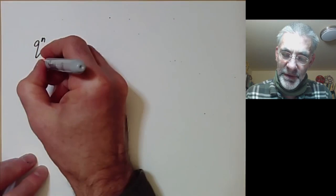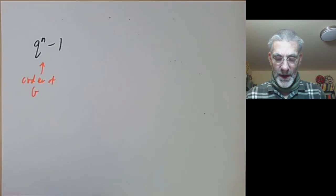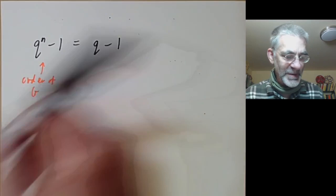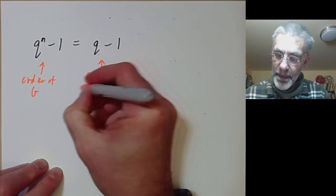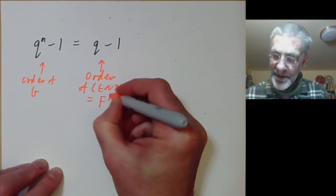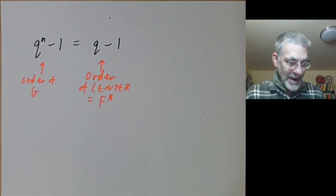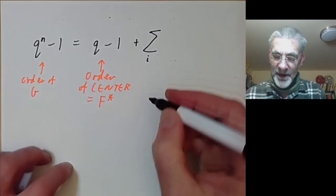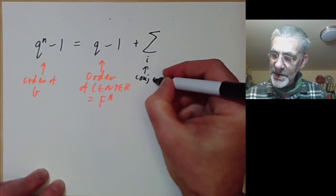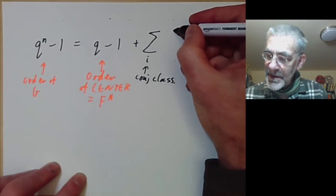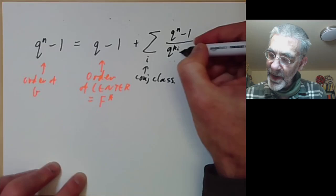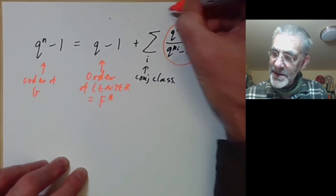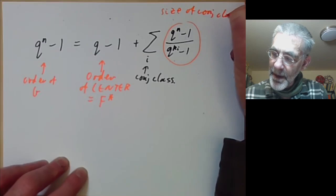So let's just look at the conjugacy classes, and we're going to count the number of elements in each conjugacy class. And what we do is we get the following formula. First of all we have q to the n minus 1, so this is the order of g. And it's equal to various terms. So the first term is going to be q minus 1, and this is just the order of the center. And the center is just the non-zero elements of the field F. And then we have to add a sum over various conjugacy classes. So this is going to be some conjugacy class. And then we want the number of elements of the conjugacy class, which is going to be q to the n minus 1 over q to the ki minus 1. So this bit here is the size of the conjugacy class.